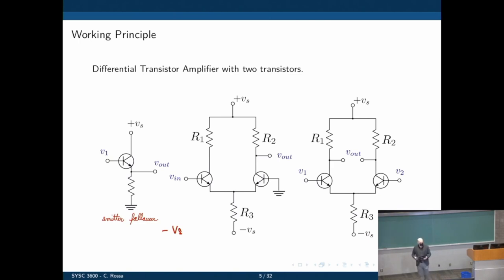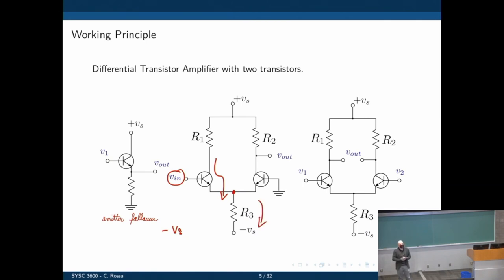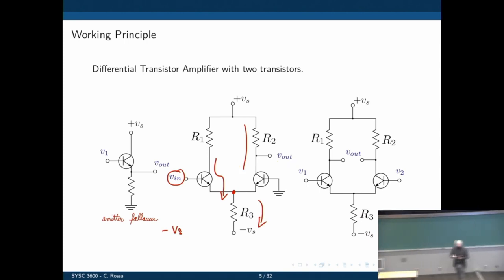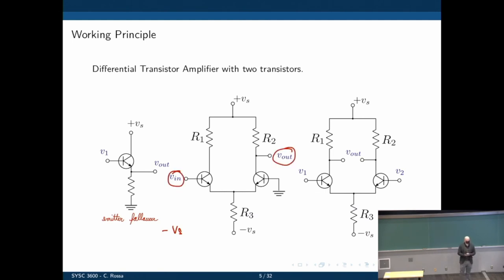We can also do the opposite. If Vin decreases, we let less current through. As we let less current through, the voltage potential approaches Vs, which means the current through that branch increases, and Vout gets farther away from Vs, so Vout decreases as well. In summary: Vin regulates Vout - the greater Vin, the greater Vout; the smaller Vin, the smaller Vout.